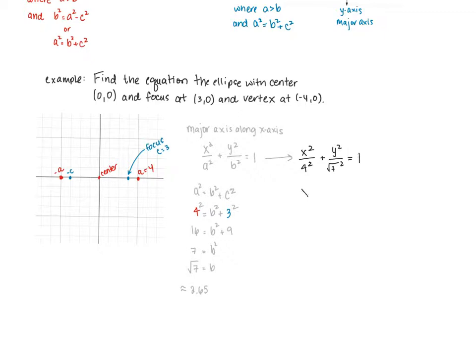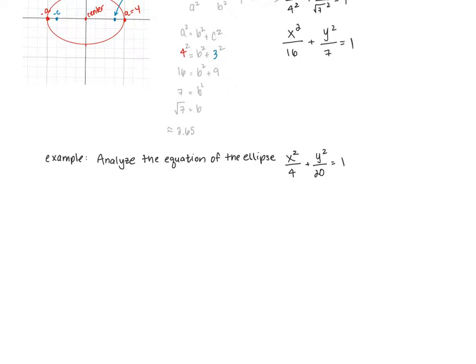If we plug in a squared, so 4 squared into the equation, and b squared, square root of 7 squared into the equation, our final equation is x squared over 16 plus y squared over 7 equals 1. Once we find the b value, we know how to finish drawing our ellipse by going 2.65 units above and below the center.